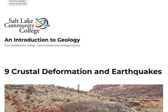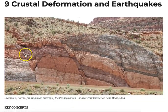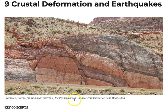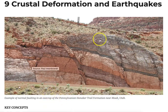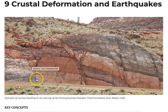Hello, Tor Lacey here with a reading from the chapter Crustal Deformation and Earthquakes from the textbook Introduction to Geology, a free textbook for college level introductory geology courses from Salt Lake Community College. The photograph here is showing an example of normal faulting in an outcrop from the Pennsylvanian Honaker Trail Formation near Moab, Utah. Pennsylvanian being from the geologic time scale, indicating the approximate age of the rock formation that has been faulted, and we see the outcrop has been faulted in several places as evidenced by the offset strata.